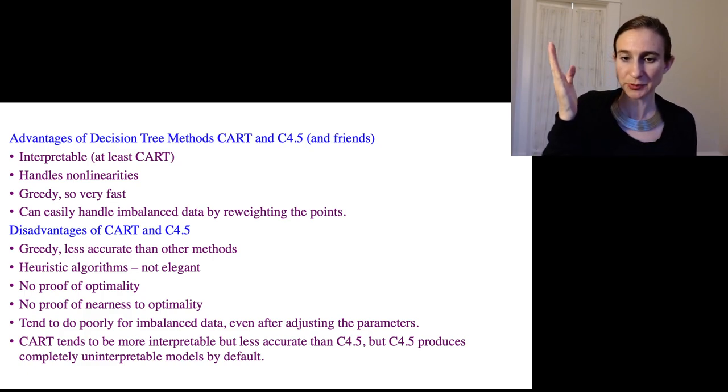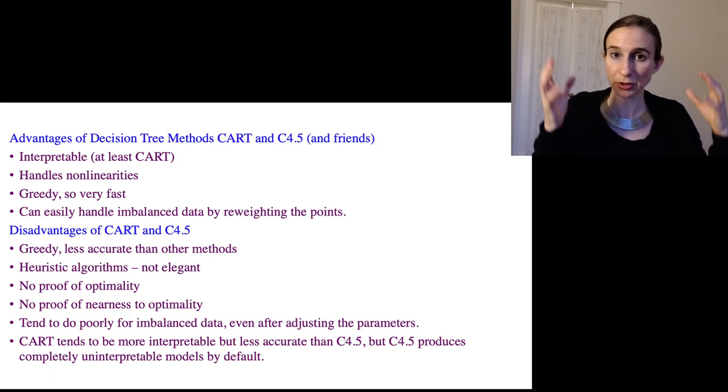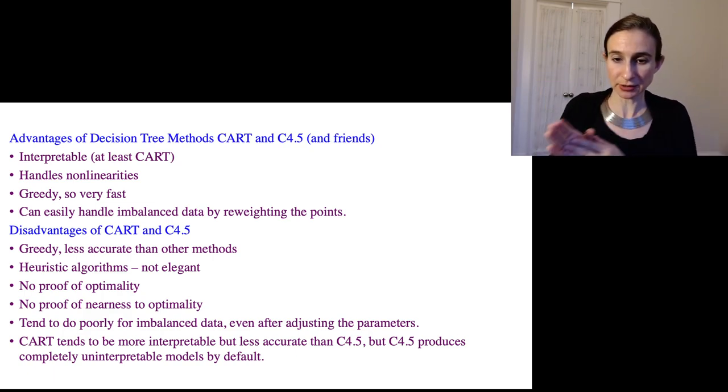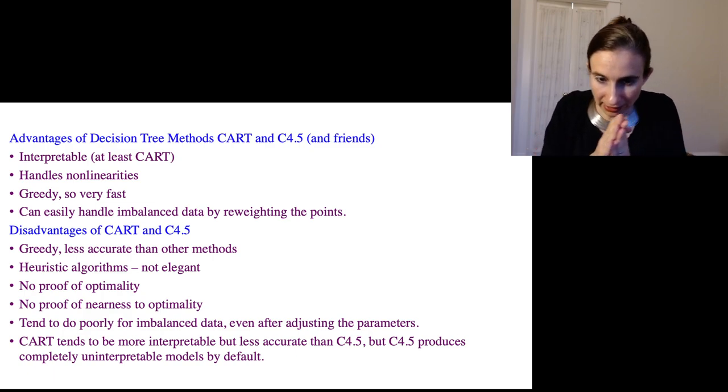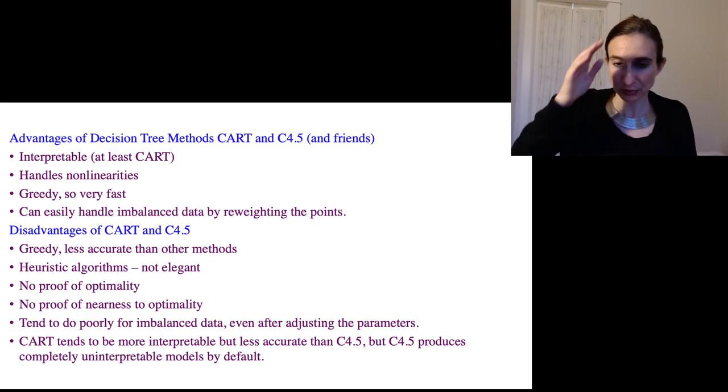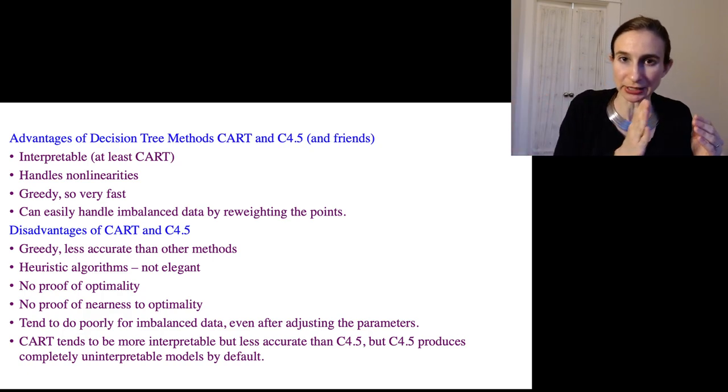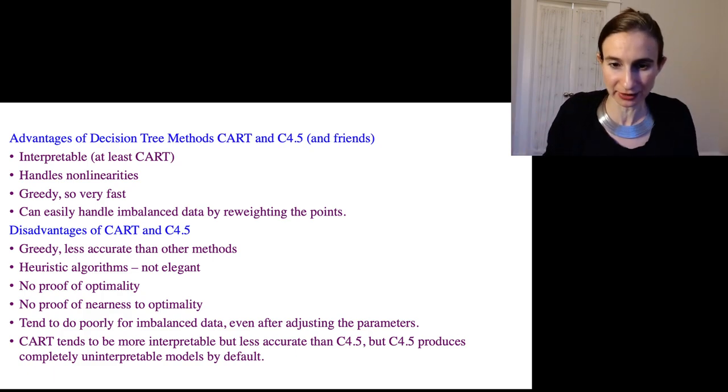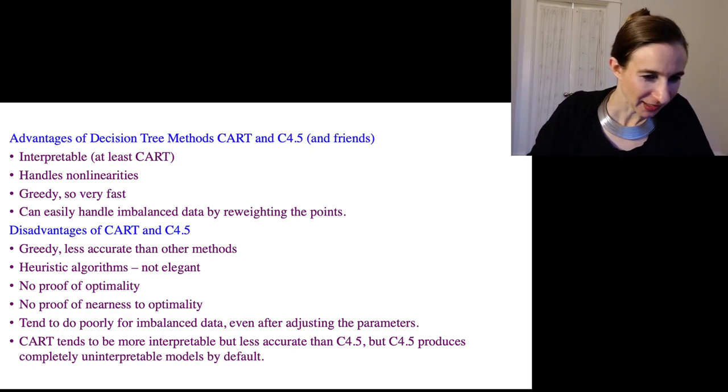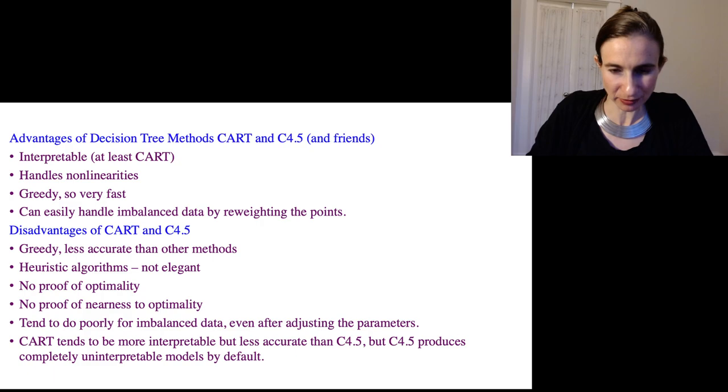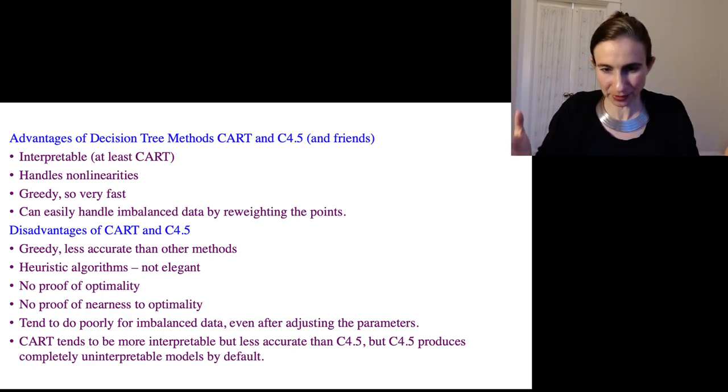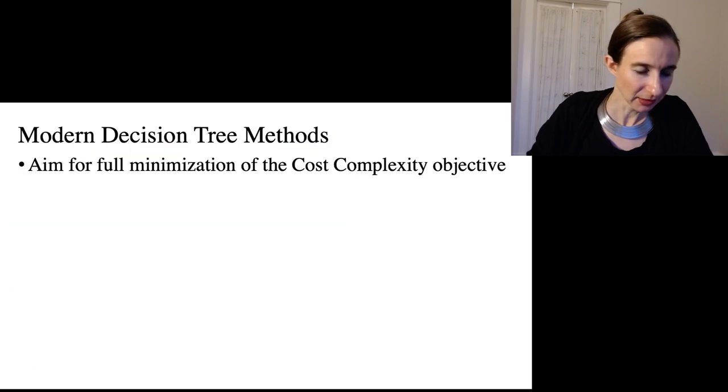And as I mentioned earlier, these methods tend to do pretty poorly for imbalanced data, even after adjusting the parameters. Sometimes if you adjust the imbalanced parameter to one extreme, then the trees it produces vote always positive. And then if you adjust the parameter gradually all the way through to the other extreme it predicts all negative, and you cannot get anything in between. So it goes like one small tweak to the imbalanced parameter, it goes from predicting all positive to predicting all negative. Also as I mentioned, CART tends to be more interpretable but less accurate than C4.5, where C4.5 produces these uninterpretable models by default.